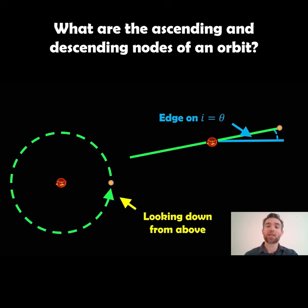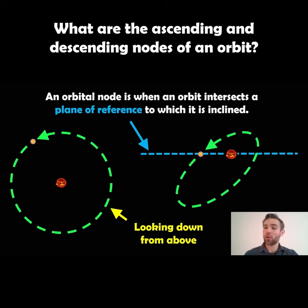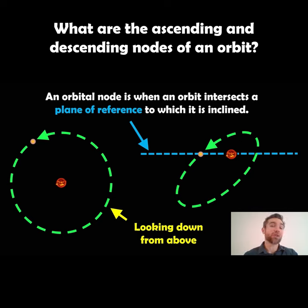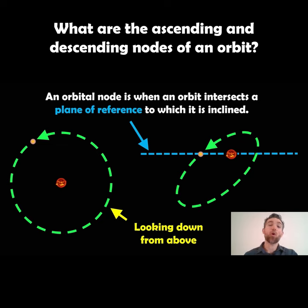So the orbit will be going through that reference plane. Now, what are the orbital nodes? If we've got an inclined orbit and our plane of reference is the blue dashed line, then each orbit the body is going to go through that plane of reference twice. In the example shown, the body is orbiting and going down through the plane, and when it comes back around it goes up through it. There are two orbital nodes on an orbit — where it intersects the plane of reference.